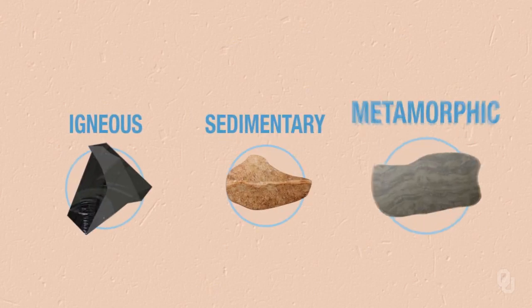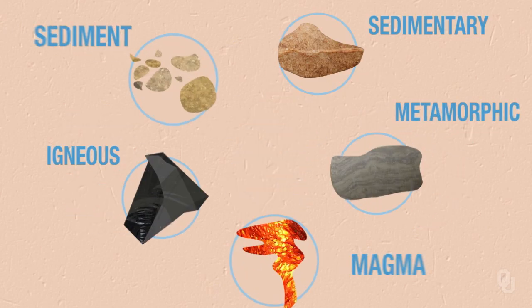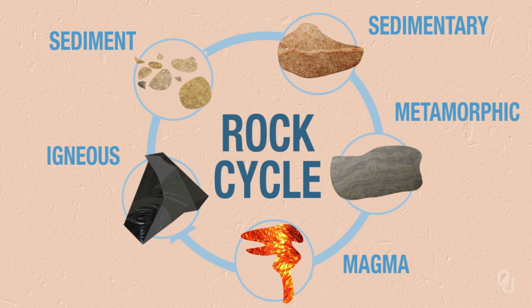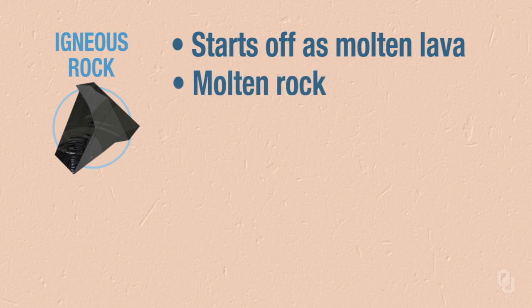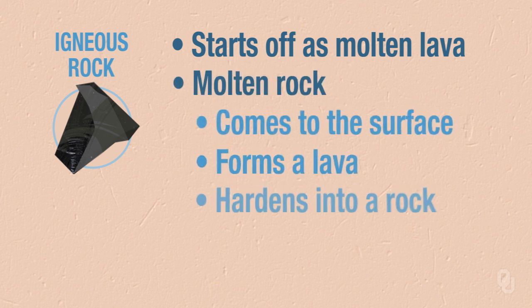Now, all three types of rocks are connected by the rock cycle, as you can see in this graphic. We'll start with igneous rocks, which begin as molten lava. The molten rock comes to the surface, forms lava, it hardens, and it becomes a rock.